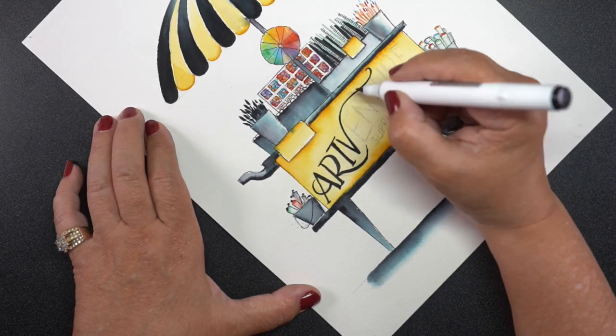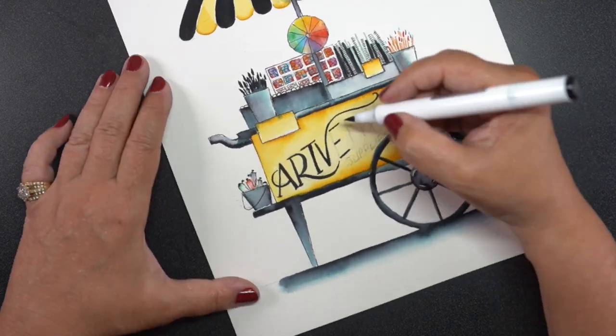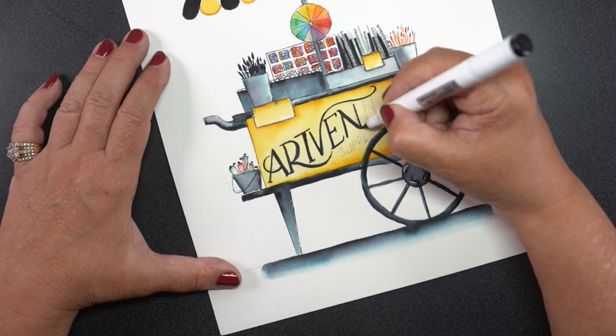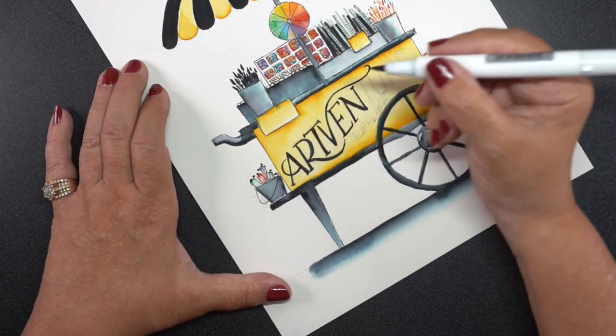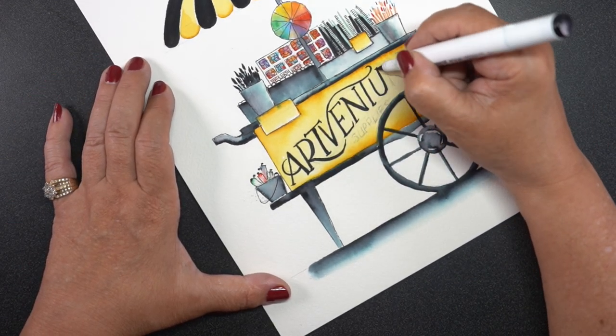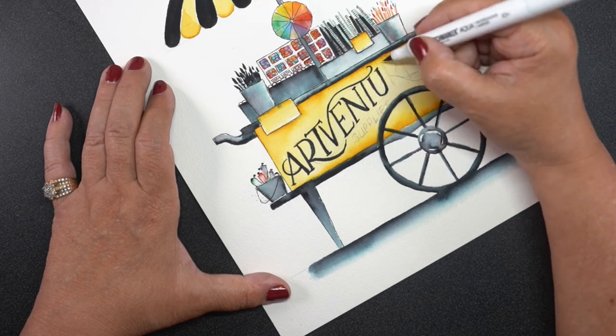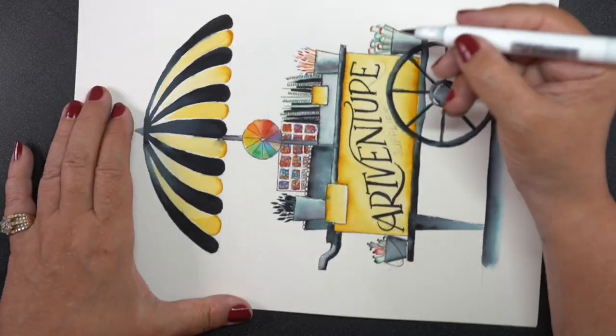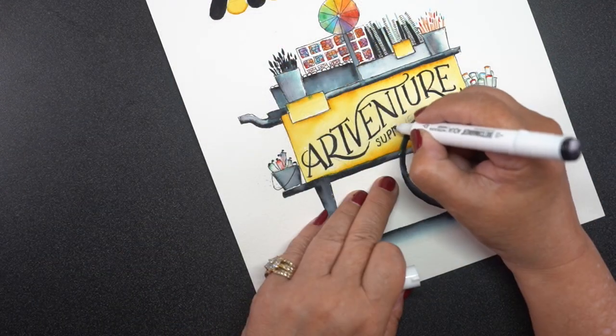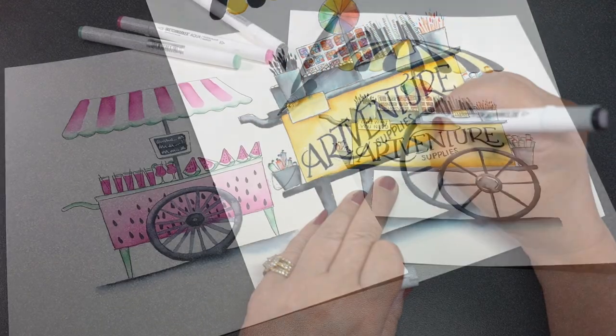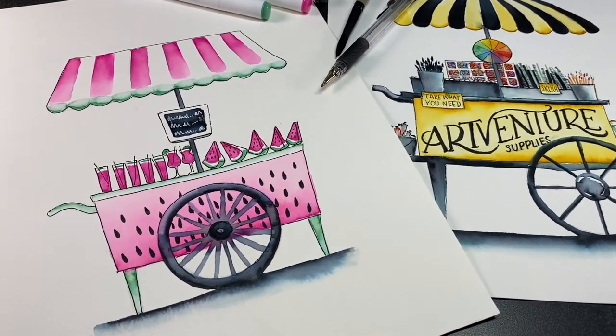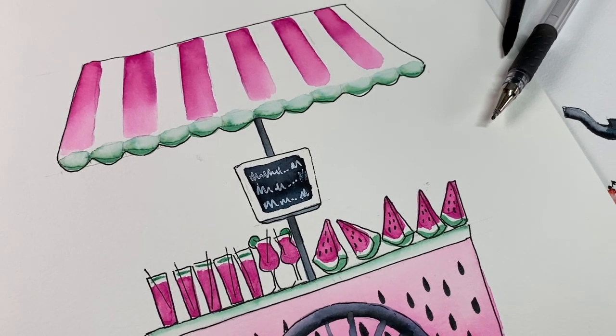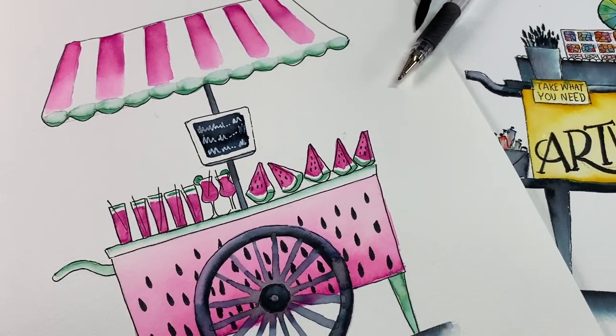So link to that category on the website will be in the doobly-doo down below, along with the supplies that I used to make these two drawings. And I'm going to link you up to Society6, because I think this art venture cart needs to be a print that we can hang on our walls in our studio. Because even if we don't have a cart that rumbles down the street with free art supplies, we can have a beautiful painting that does the same thing, right? We can wish. We can wish it into existence. So I would even take a watermelon cart rumbling down my street right now. That would be great.